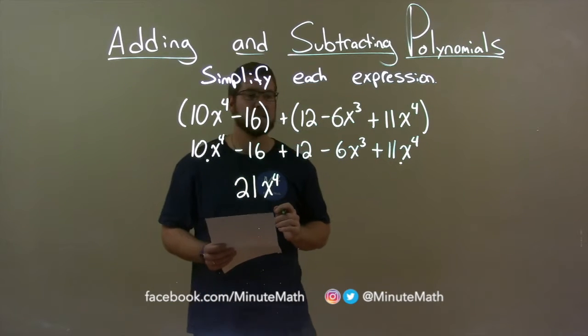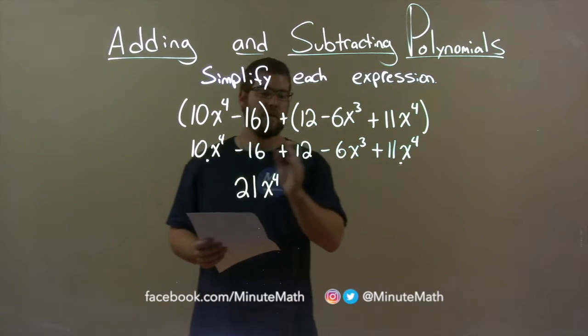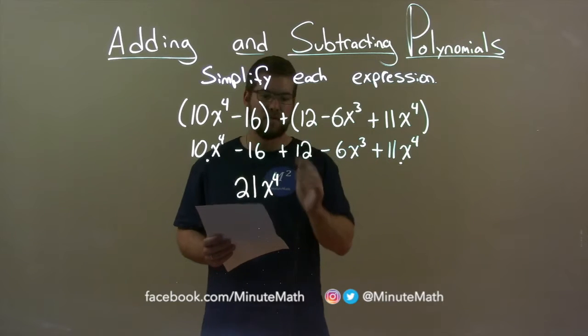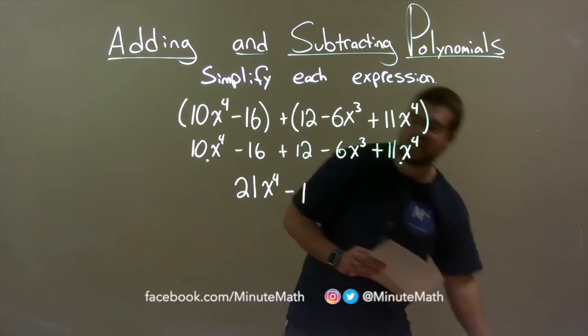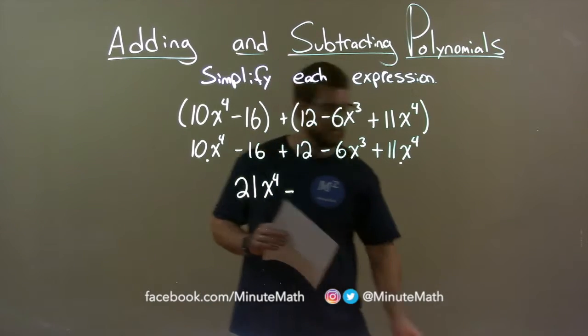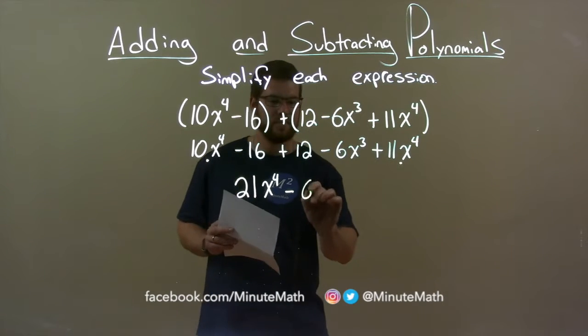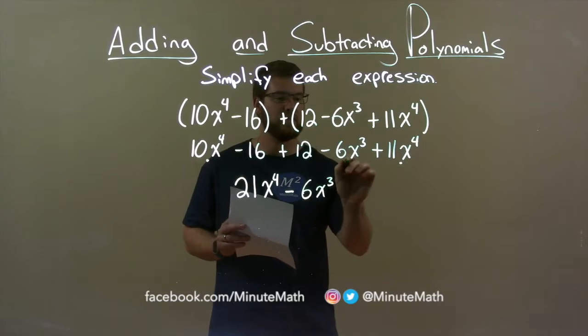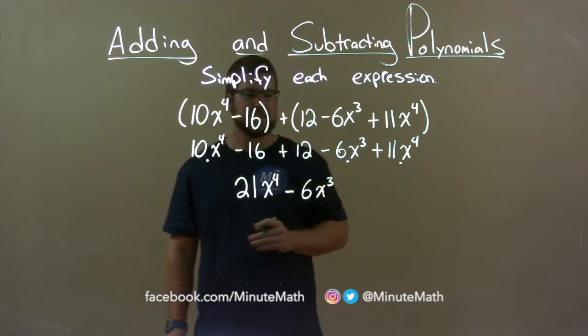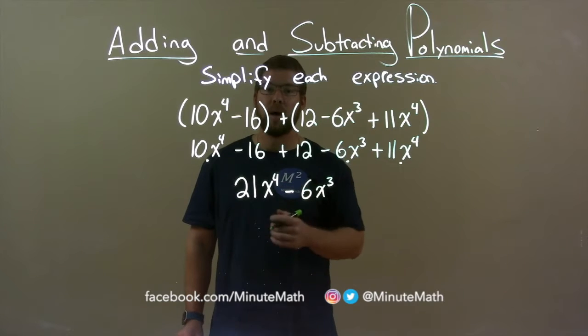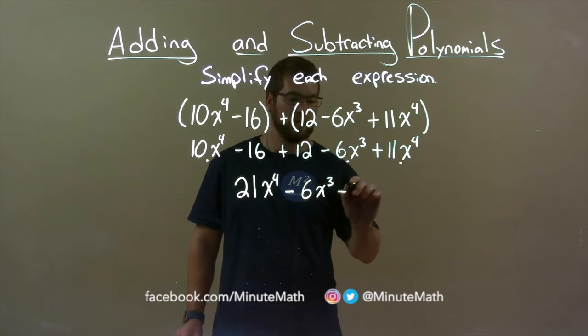The next highest degree that I see is x to the 3rd. There's nothing else that's x to the 3rd, so we can just bring that down. Minus 6, whoops, let's put 16 there. A 6x to the 3rd. And I put dots to show which ones I've brought out. Minus 16 plus 12 combines to be a minus 4. So, minus 4 here.